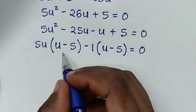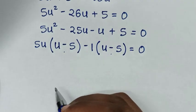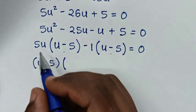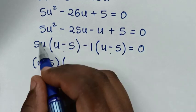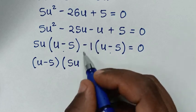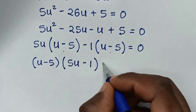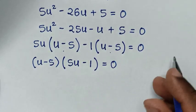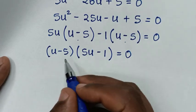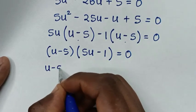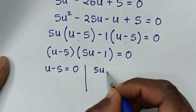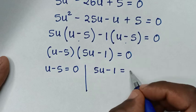In the next step, (u minus 5) is common, so we factor it out to get (u minus 5)(5u minus 1) equals 0. This gives us two solutions: the first is u minus 5 equals 0, and the second is 5u minus 1 equals 0.